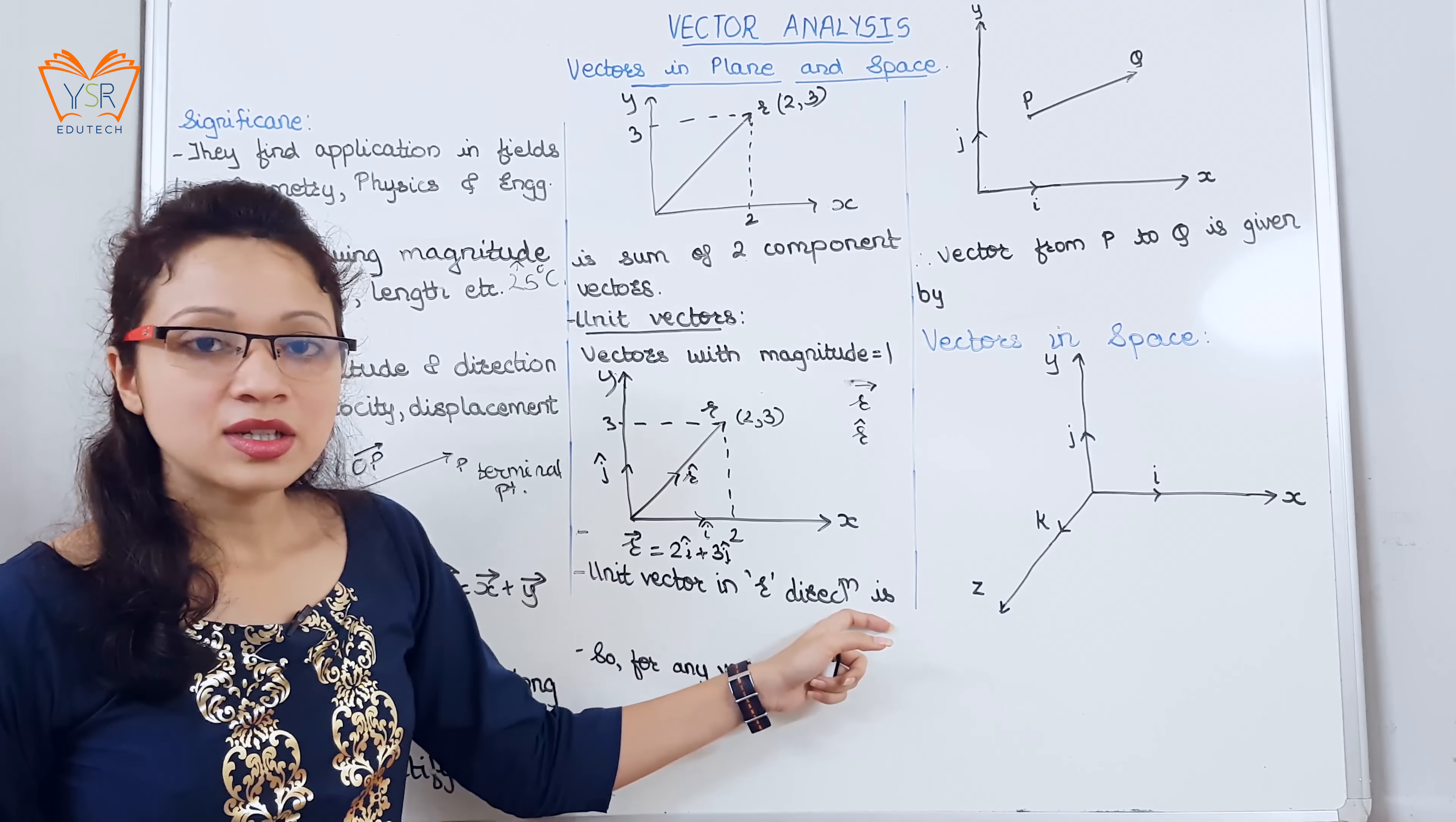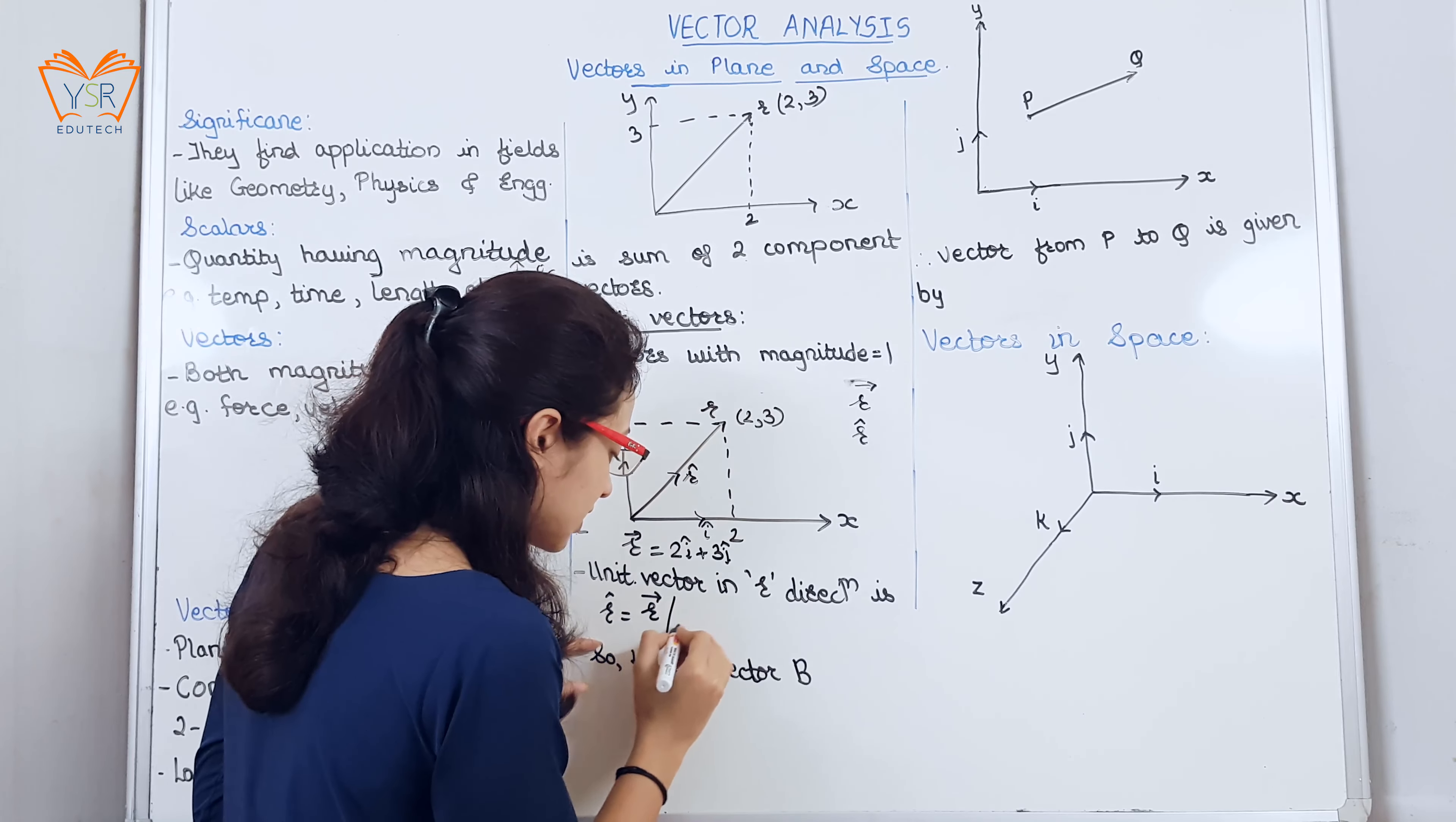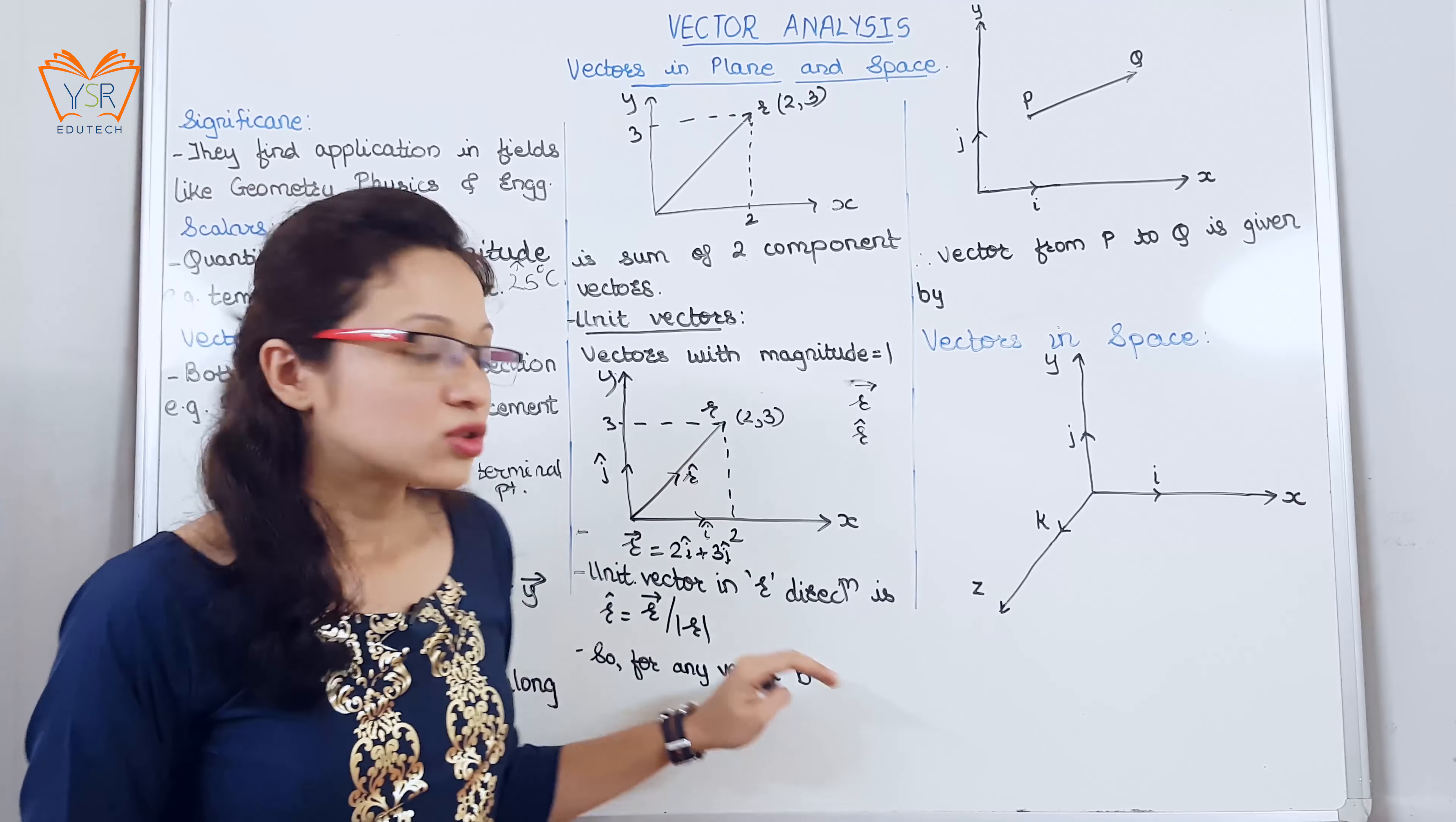Now, unit vector in the r direction, so r cap, is given by the formula r vector divided by the r modulus. R modulus is the magnitude of r.